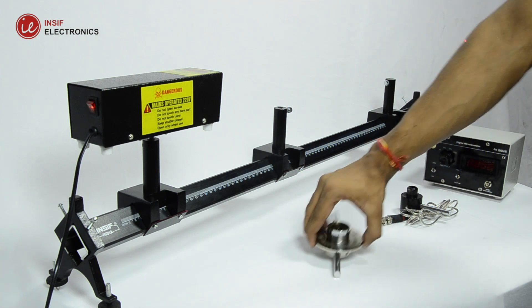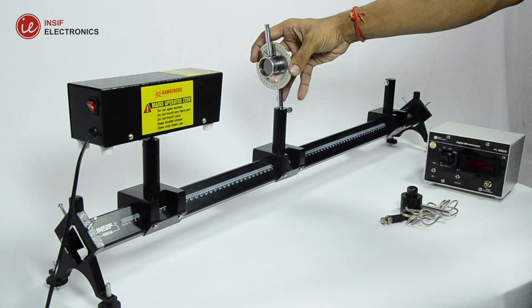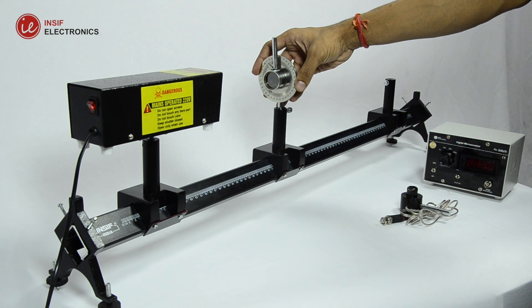Now place the analyzer polarizer and adjust its height so that the laser point is at center position and set analyzer to zero position.